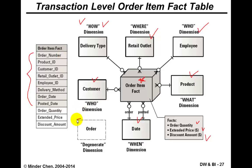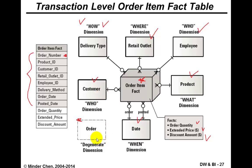Order number is also used as part of the primary key in this case. However, the order data has been spread and distributed to the dates table and the customer table, so by itself it does not have any attribute other than the order ID. We call this a degenerate dimension.